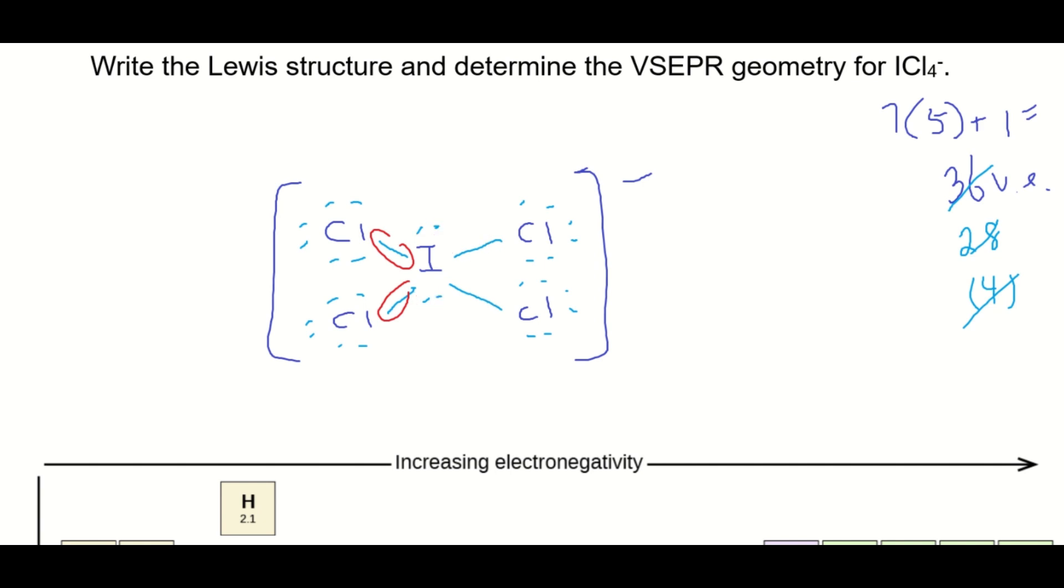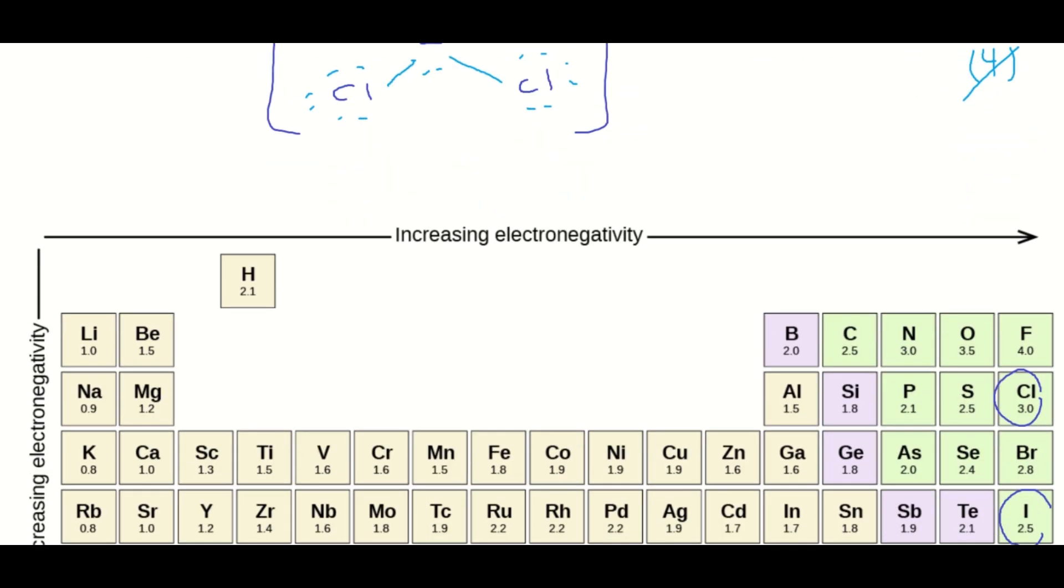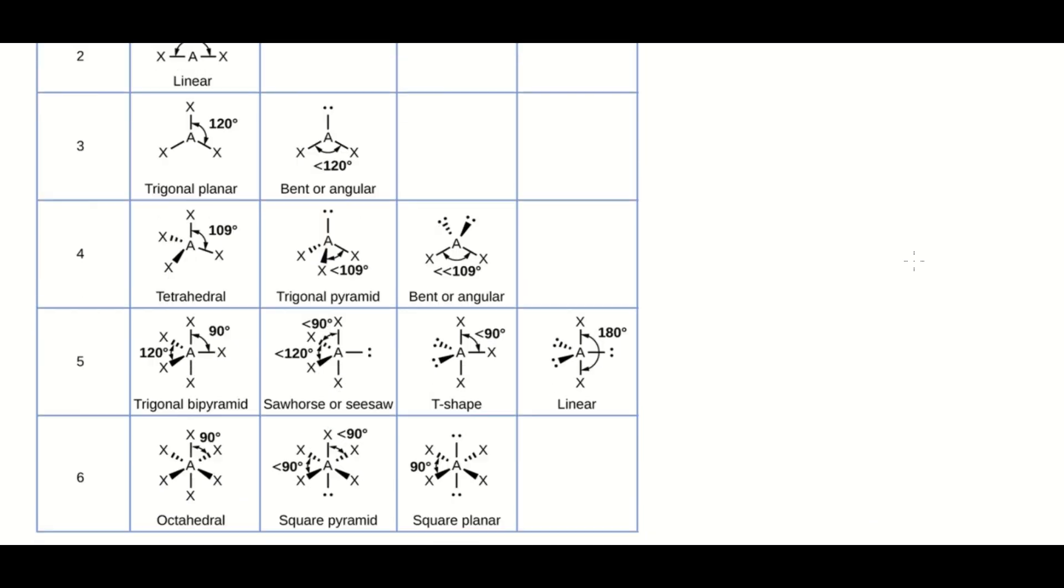Those 6 electron pairs want maximum separation to minimize their repulsion for each other. So when you have 6 areas that want to get away from each other, then that parent geometry is going to become octahedral.